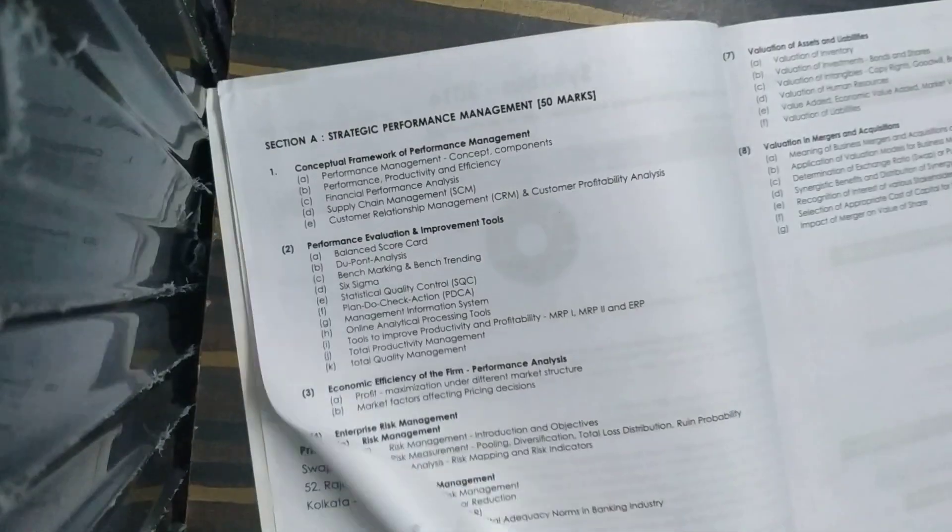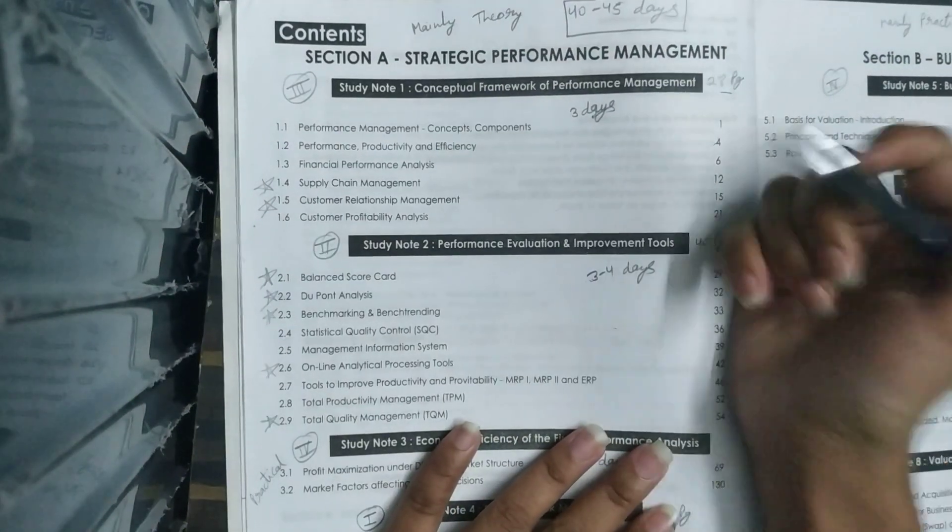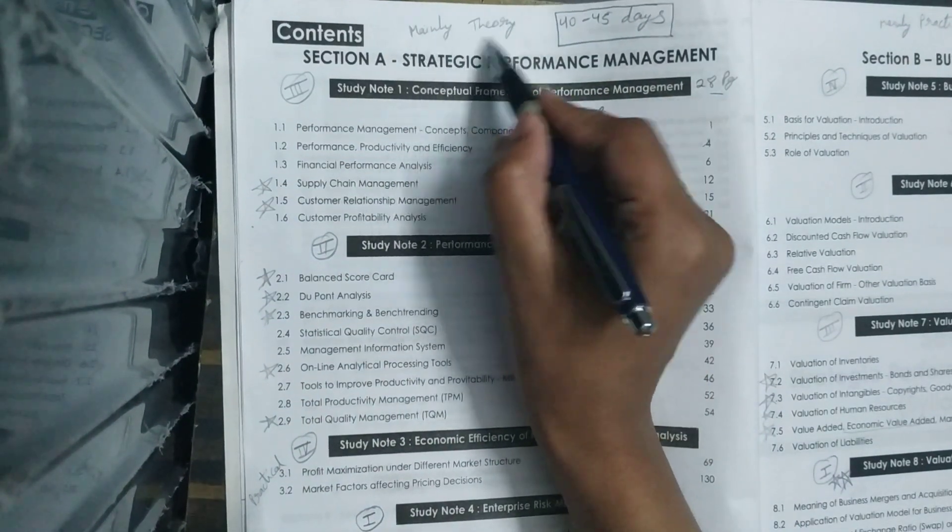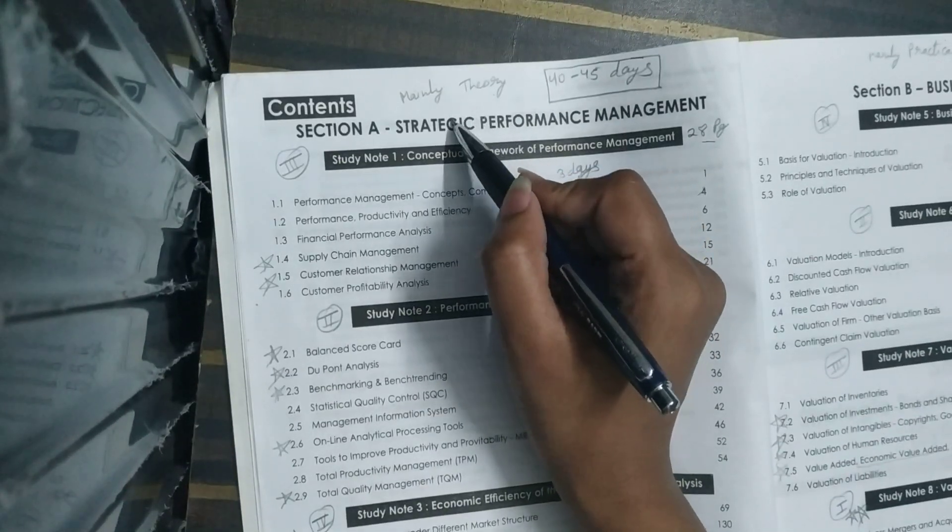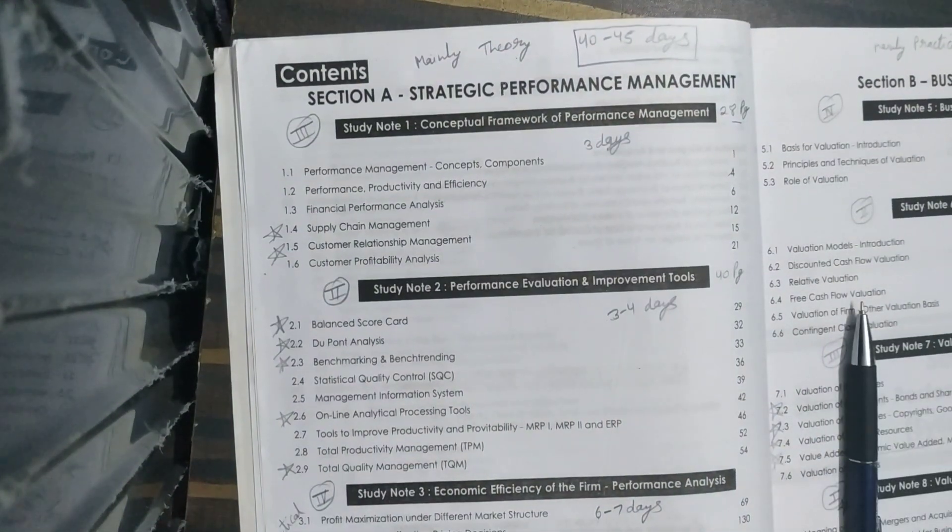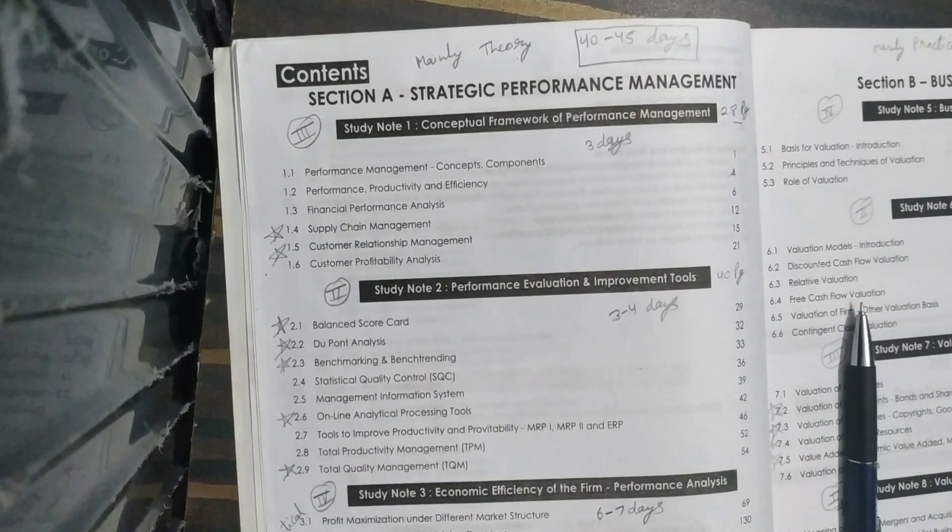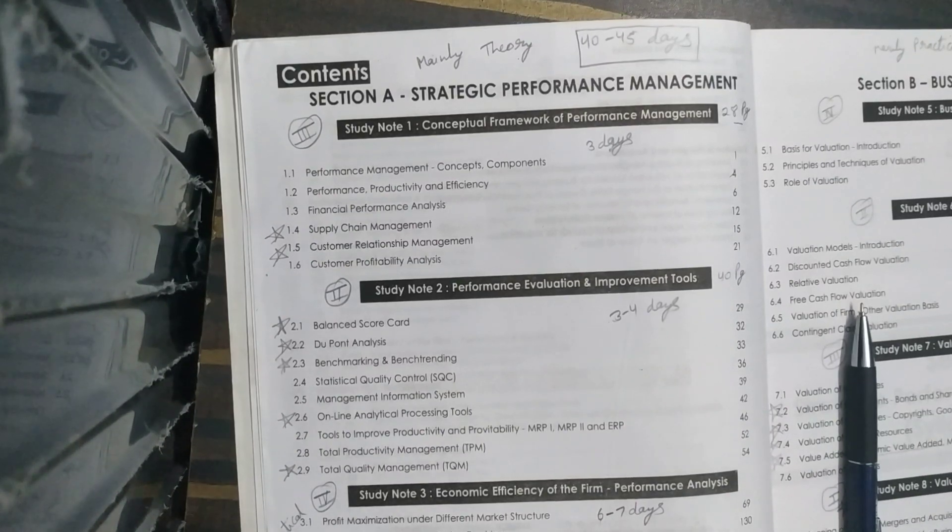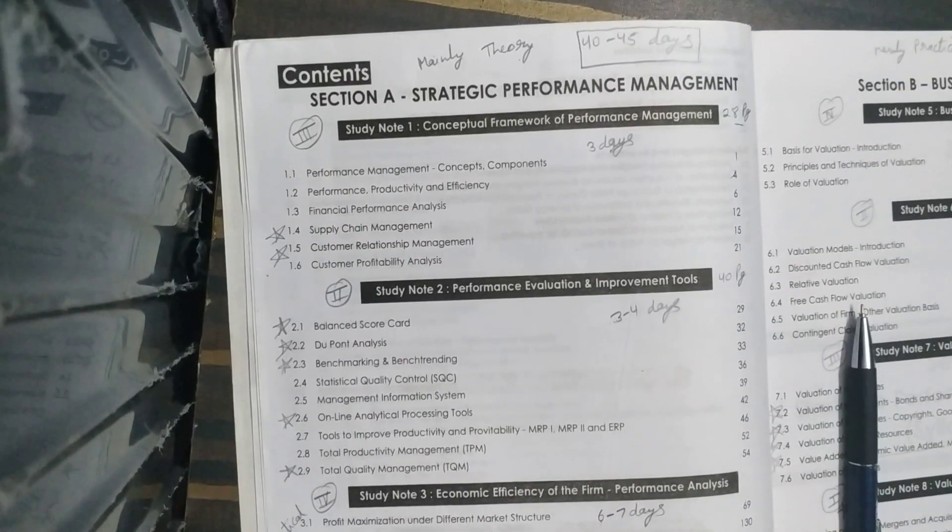First I am going to tell you about SPM, Strategic Performance Management. SPM covers mainly theory, and the questions come from theory. I have made a strategy for this subject looking at an average student. If an average student reads 10 pages every day, then he can easily cover this subject with notes and preparation. According to my strategy, you can completely cover it with revision in 40 to 45 days.